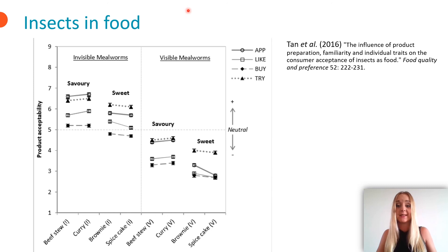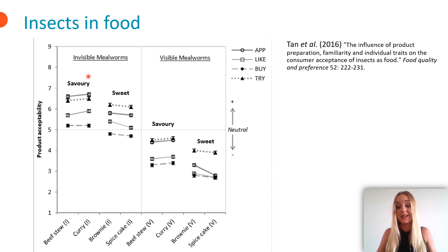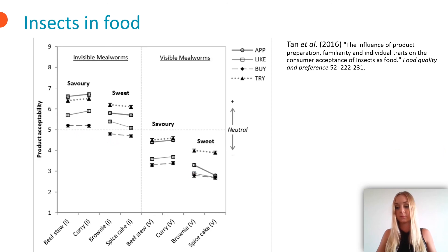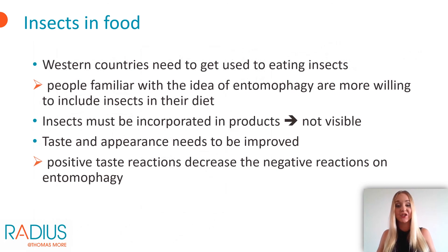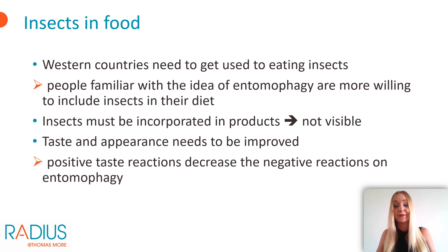Here we see an experiment with food based on mealworms. We can see that insect processing has a beneficial effect — if the insects are not visible, people are more open to the idea of entomophagy. We notice that some people want to taste it, but they are not yet willing to pay for it. So we can conclude that more needs to be done to get Western countries used to eating insects, because people who are familiar with the idea of entomophagy are more willing to include insects in their diet. Also, insects must be processed so they are not visible in products. Furthermore, efforts must be made to improve the taste and appearance of insect products and insect-based dishes, because positive taste reactions obviously decrease the negative reactions to entomophagy.